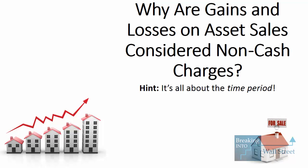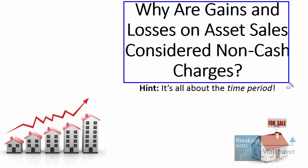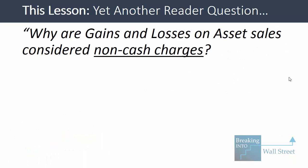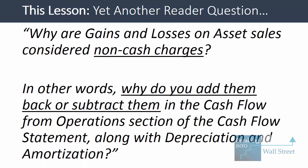Welcome to another accounting tutorial video. This time we're going to answer a very specific question that was submitted: why are gains and losses on asset sales considered non-cash charges? Why do you add them back or subtract them in the cash flow from operations section of the cash flow statement along with depreciation and amortization?